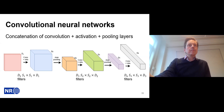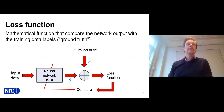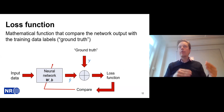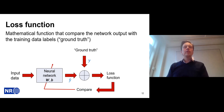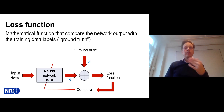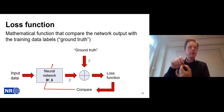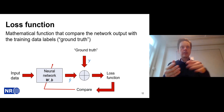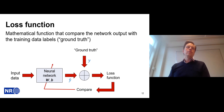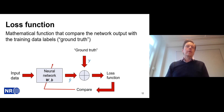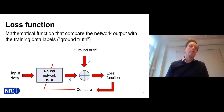To learn these weights, we use a loss function that compares the network output with training labels — we need ground truth data. We send input data through the neural network, get a prediction, compare it with the ground truth in the loss function, and adjust the filters to decrease the loss. This continues for a long time; training can typically take a day or more, depending on the data size and network size.